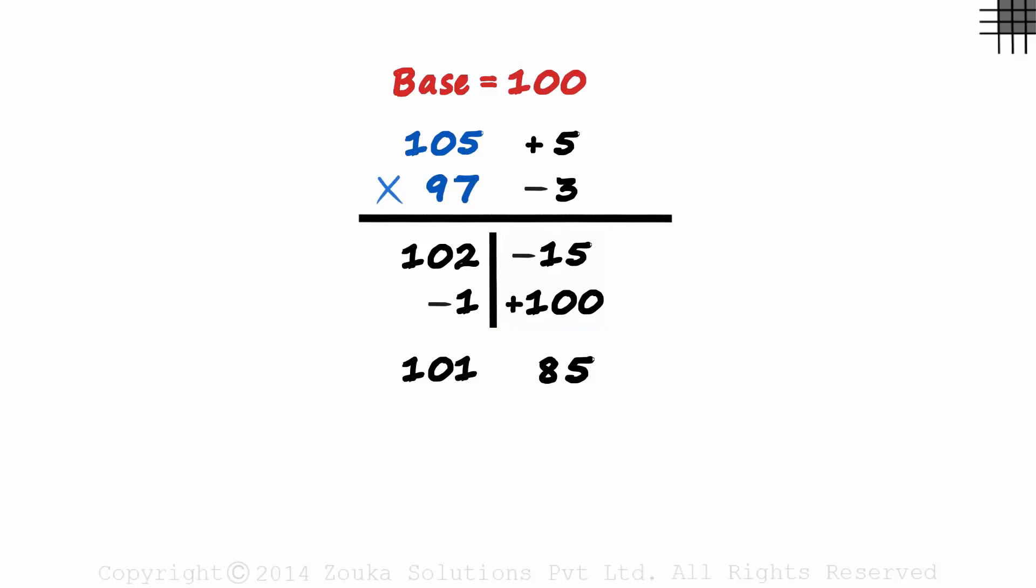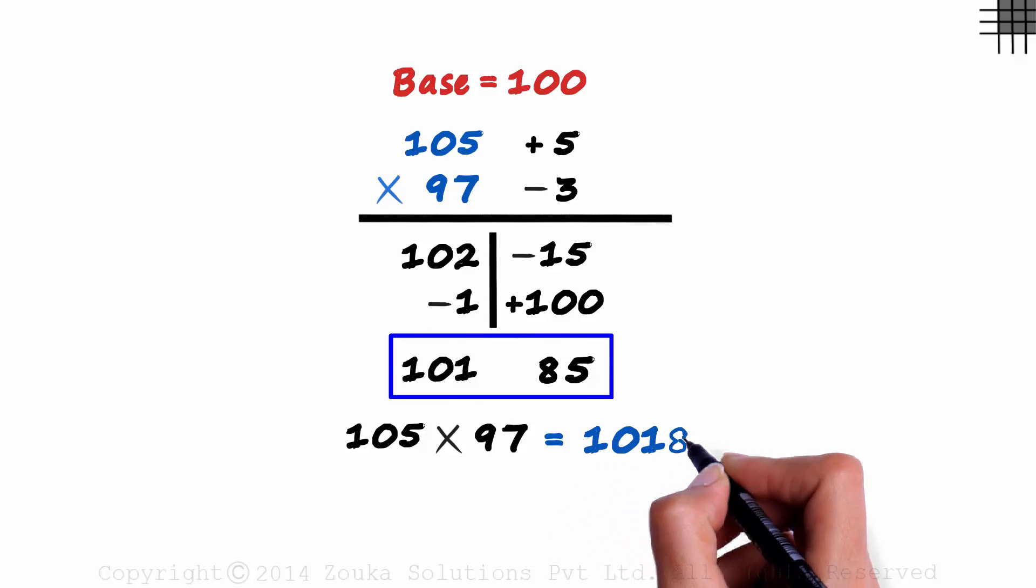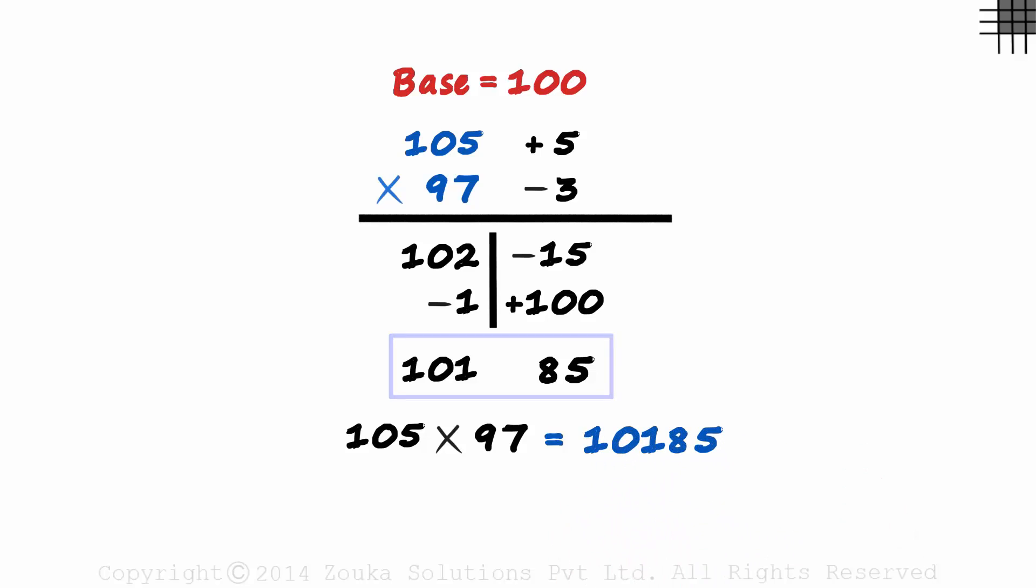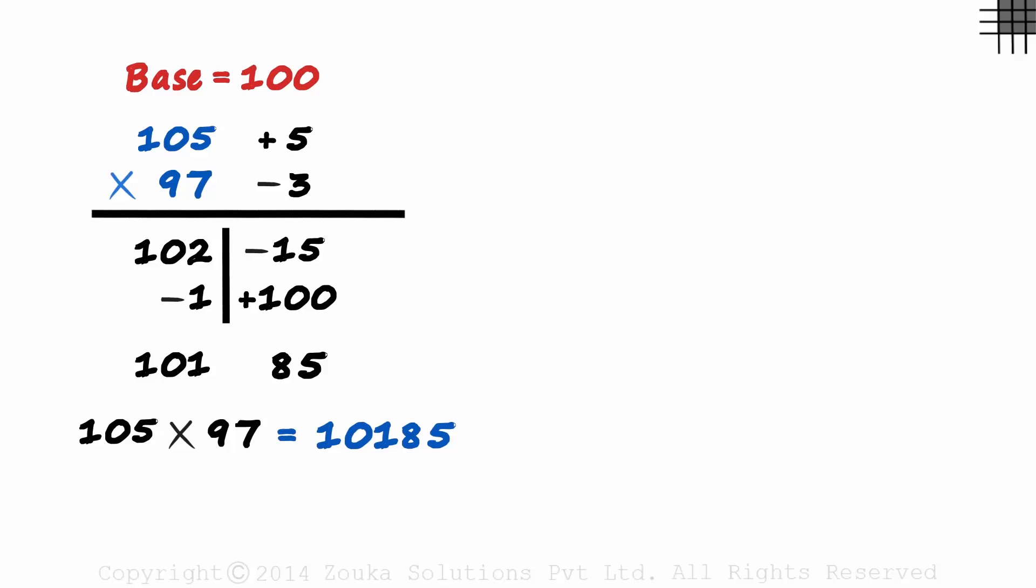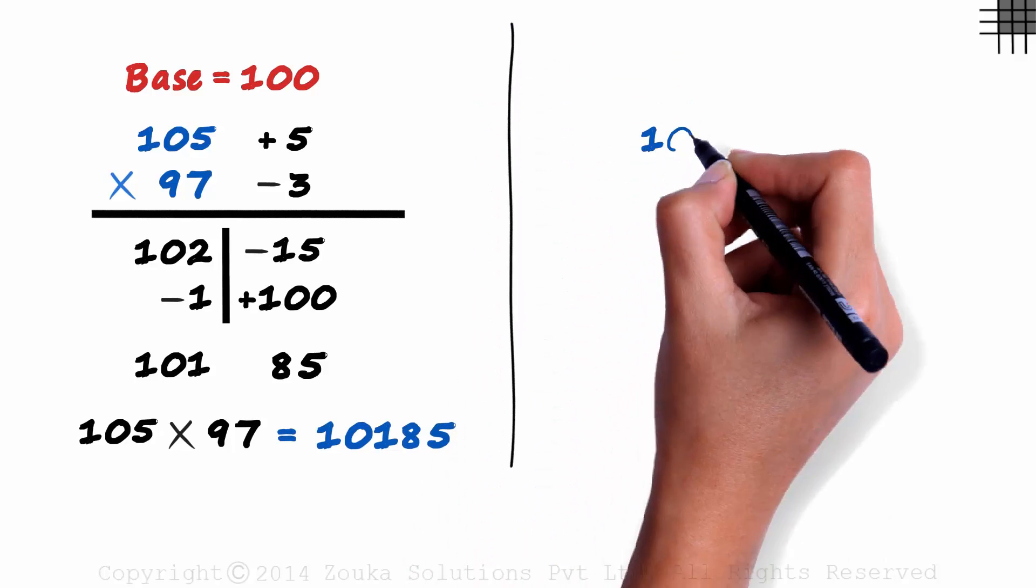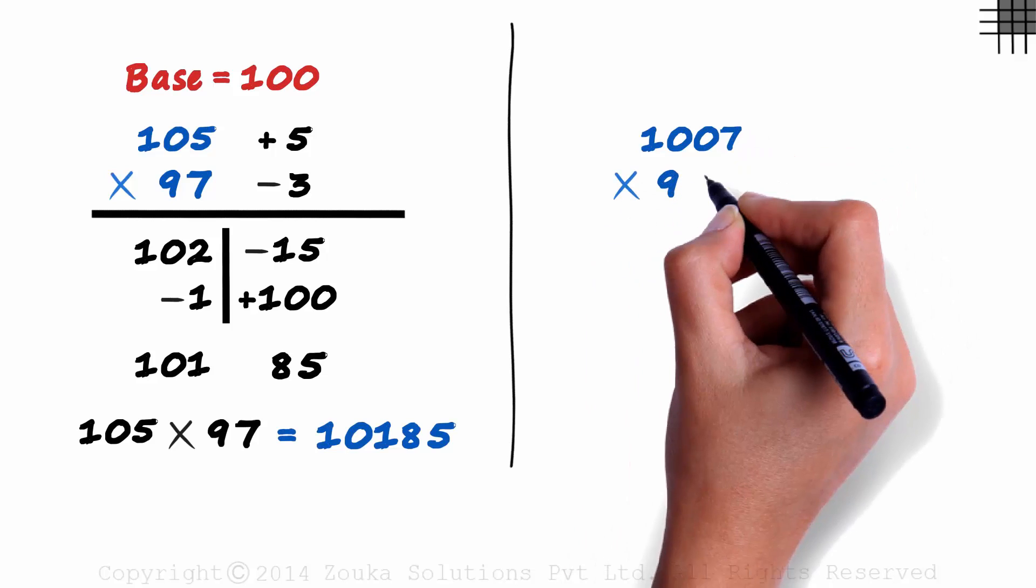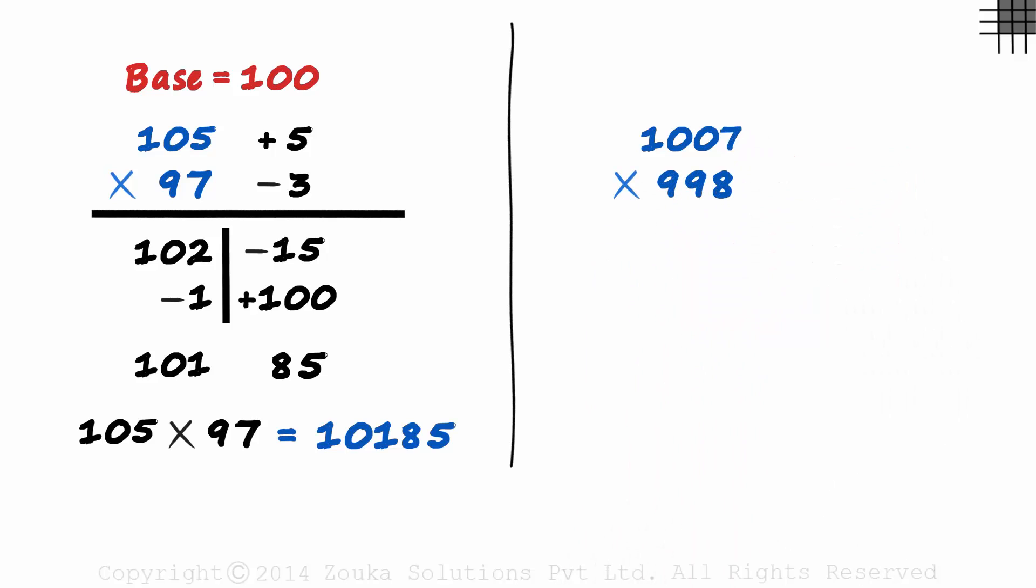That's our answer. 105 times 97 is equal to 10,185. You should try solving the next one. It's easy and I am sure you will get it right. 1007 times 998. I give you 10 seconds and your time starts now.